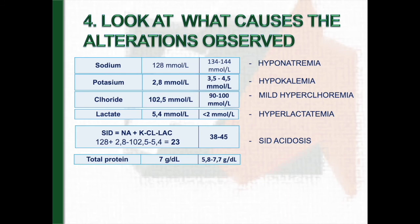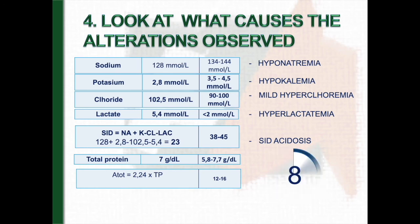We can also check the proteins and calculate A-tot. Of course, there are no changes in A-tot because there are no changes in proteins. All the changes that we can see in the pH is due to the decreased value of strong ion difference.